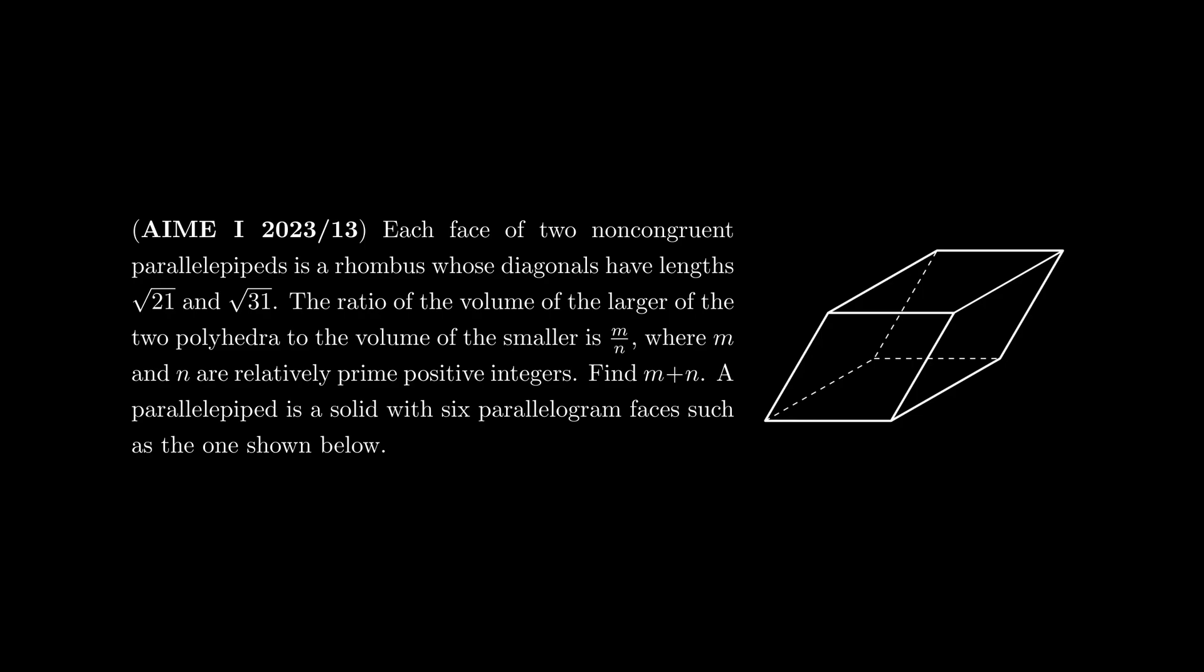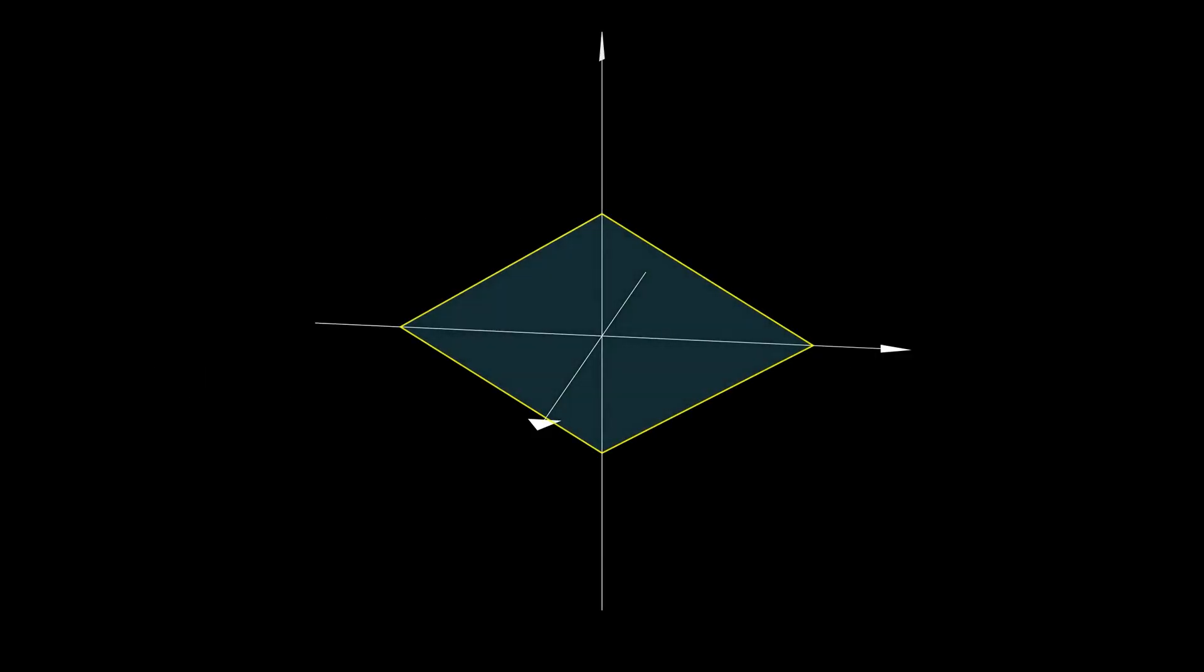A parallelepiped is a solid with six parallelogram faces such as the one shown below. The parallelepipeds described are known as rhombohedra. They can be constructed by shifting the base rhombus along the diagonals.